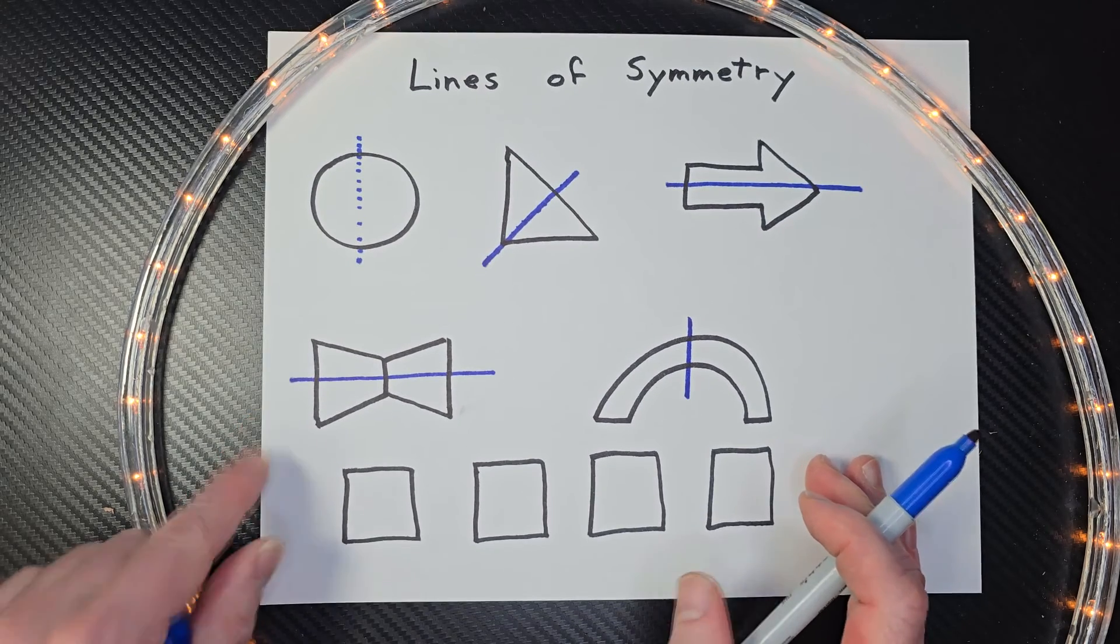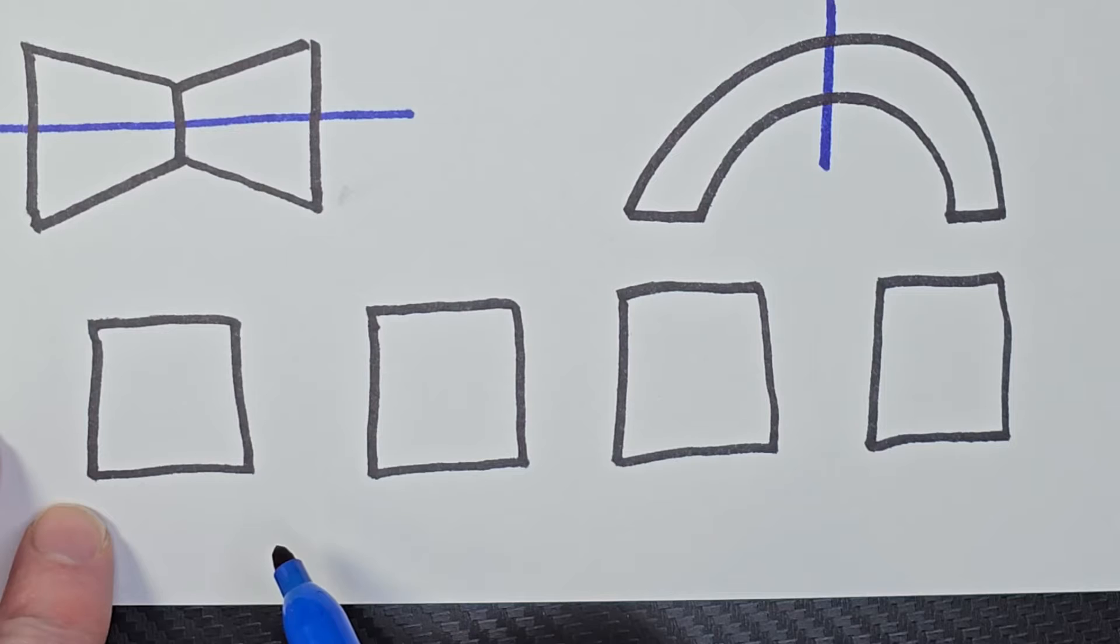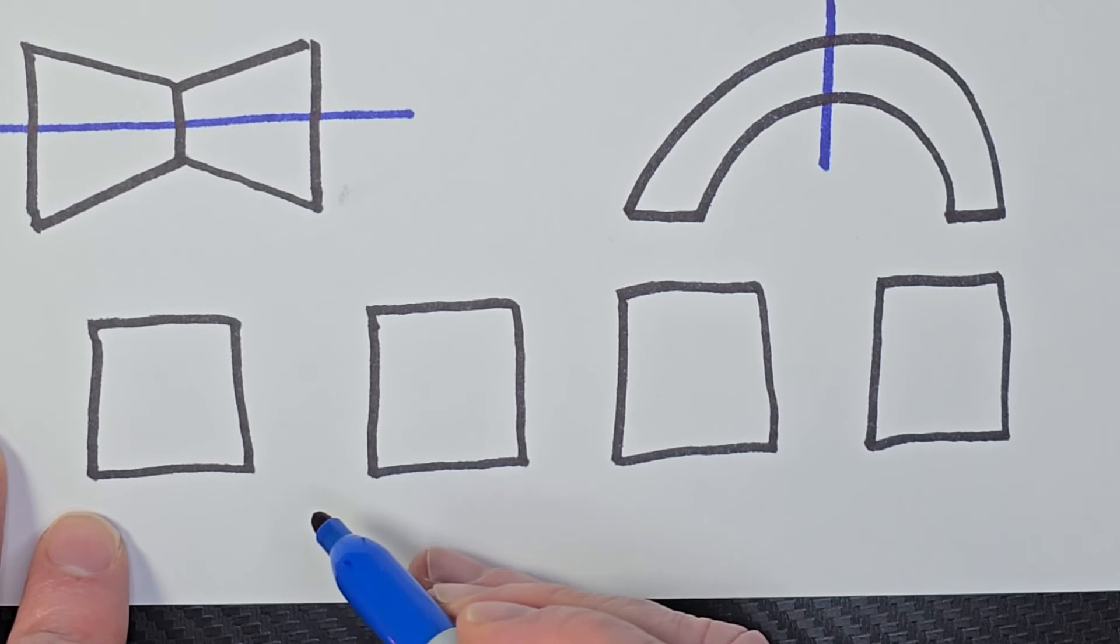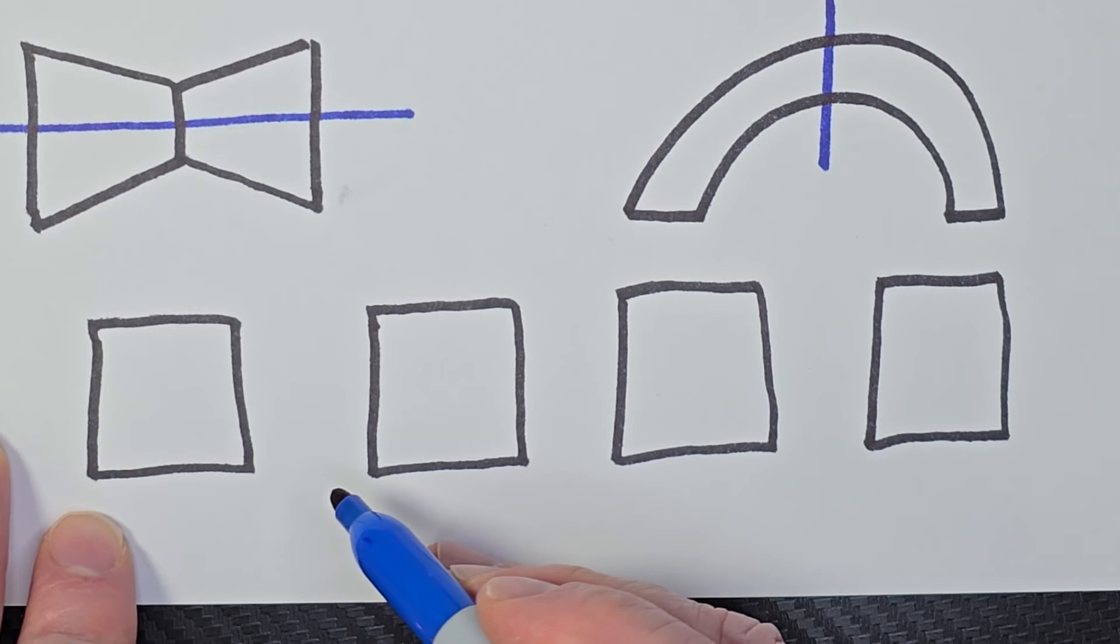Here is a challenge for you. I have a square. And there's actually four ways you can divide this into half. Can you find a couple different ways on how you can divide a square into half by using the line of symmetry? Remember, the line of symmetry divides each shape into two equal parts.